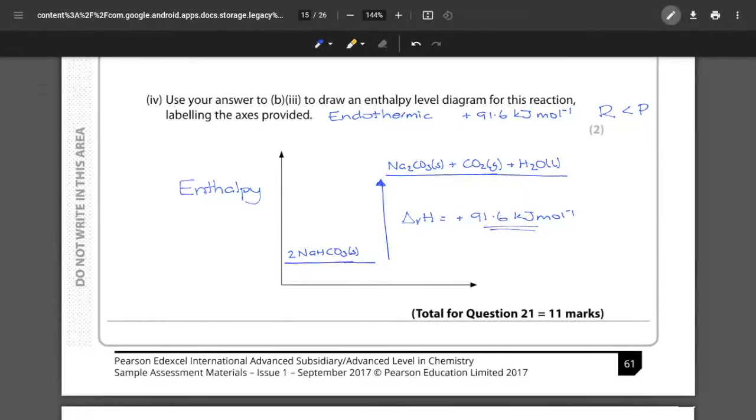That's 11 marks covering Hess's law and your enthalpy level diagrams. If you've got any questions on this energetics question, please feel free to leave a comment below and check back on the playlist for the remaining questions of this paper.